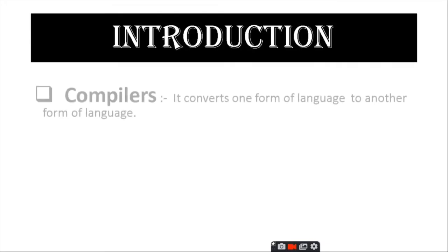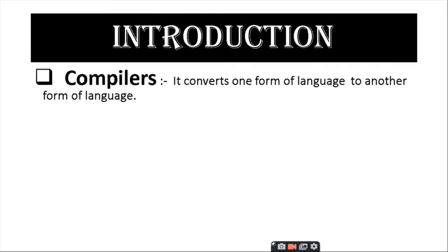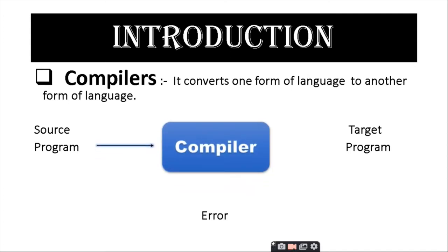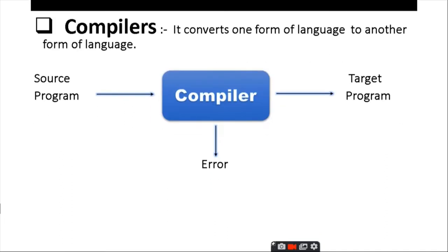Introduction to compiler. What is a compiler? A compiler is a program that reads a program written in one language — that is a source language like C, C++, and Java — and translates it into an equivalent programming language, that is a target program, which is machine code or binary code in the form of zeros and ones. It also generates some errors like lexical error, syntactic error, and semantic errors.